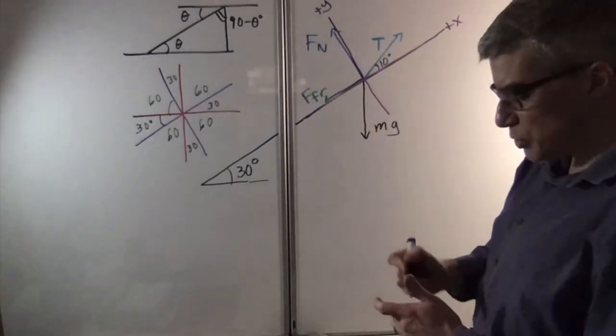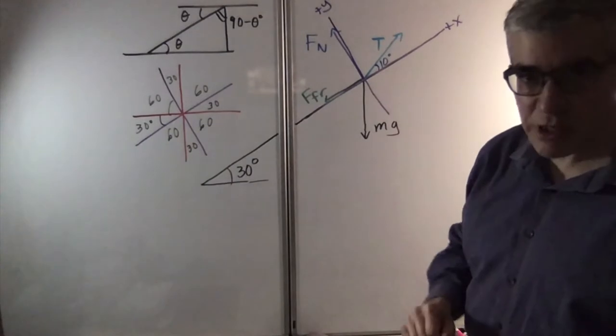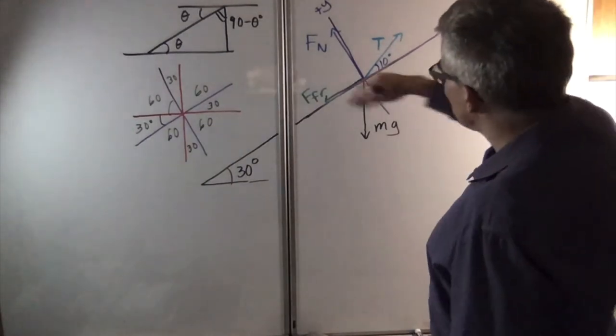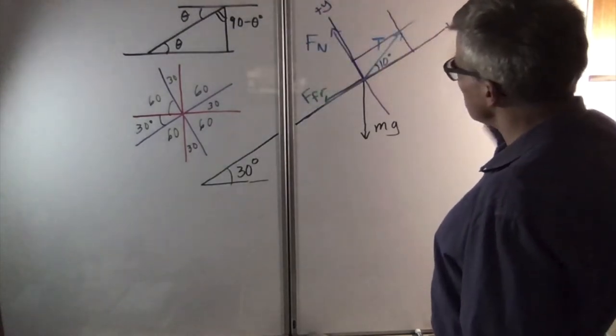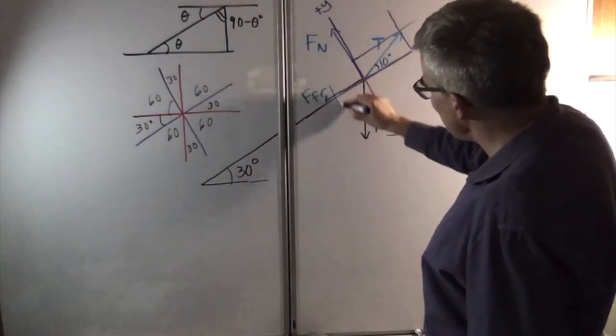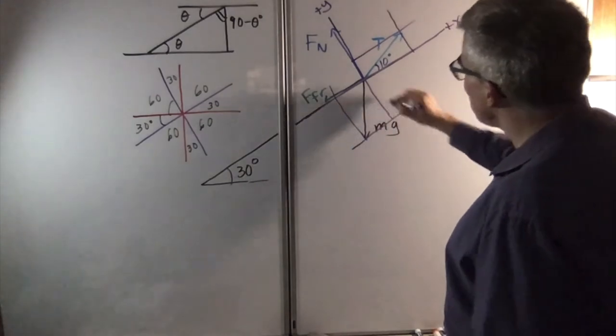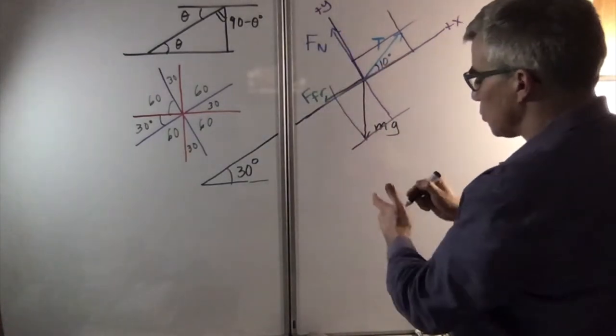Normal force and force of friction are fine. It's mg and tension that we need to break up. The purple represents an entire grid, so at the tip of the arrow we can do that. This is all part of the purple coordinate system.